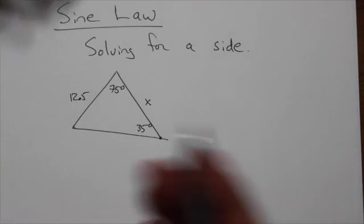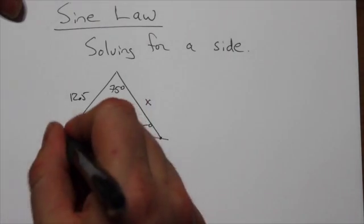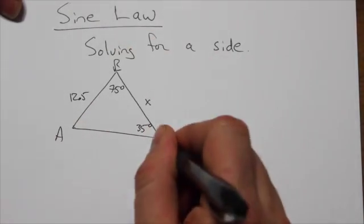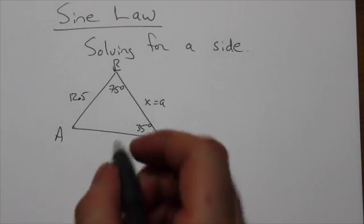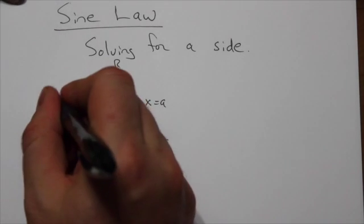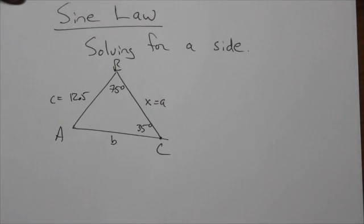Now remember, if it helps, you can label this however you want. So if we label this A, B, C, for instance, we know that the side that we're looking for is side A. This would be side B and then we're given side C here. Because you can label that however you'd like.